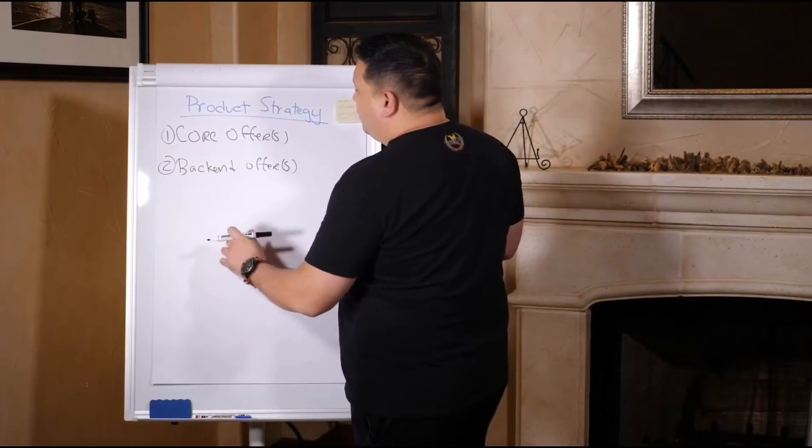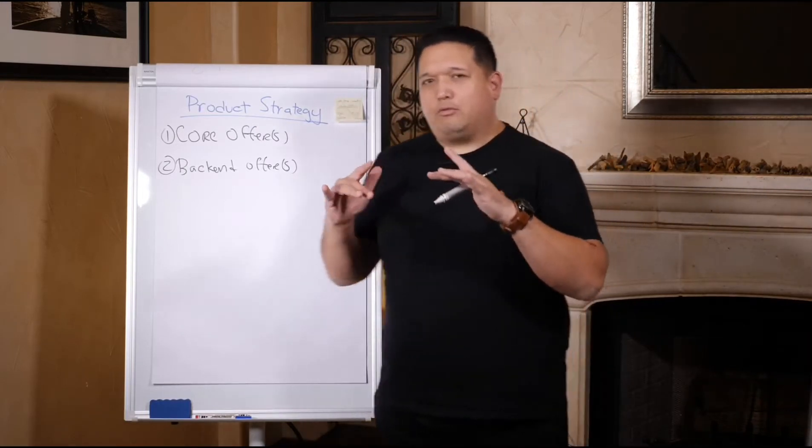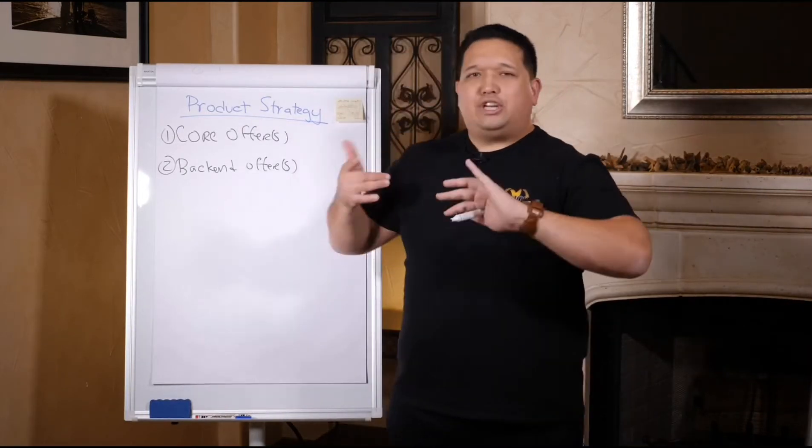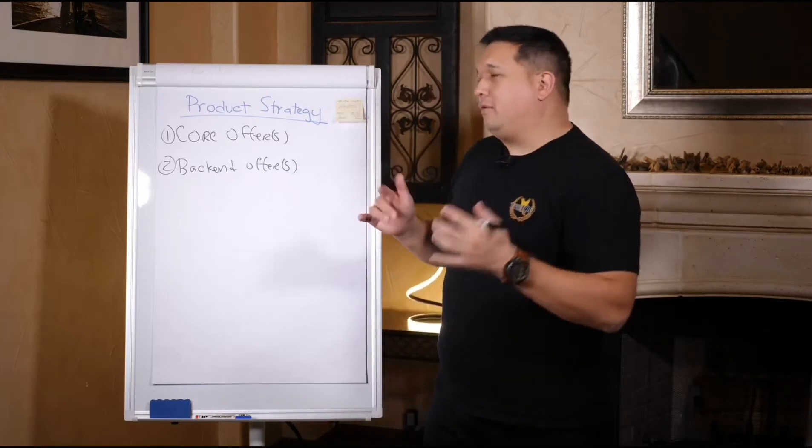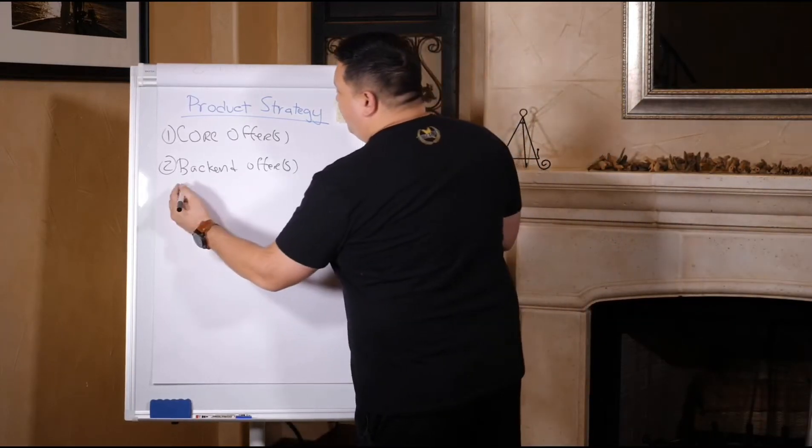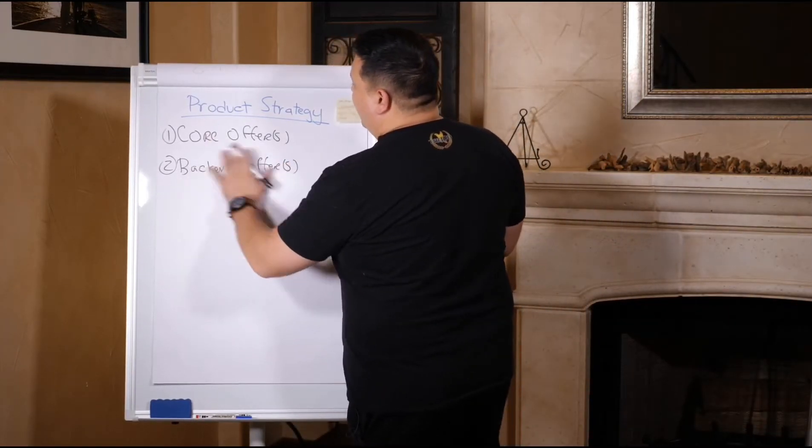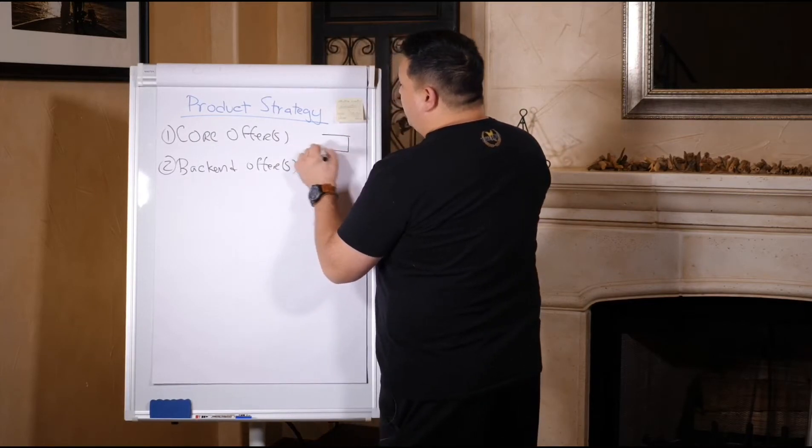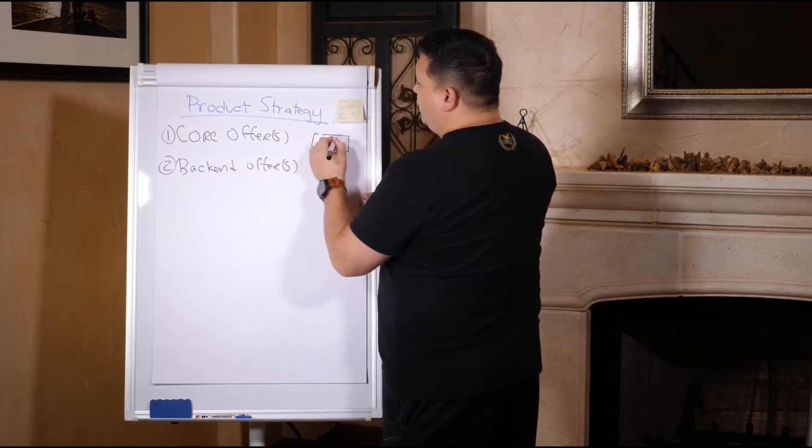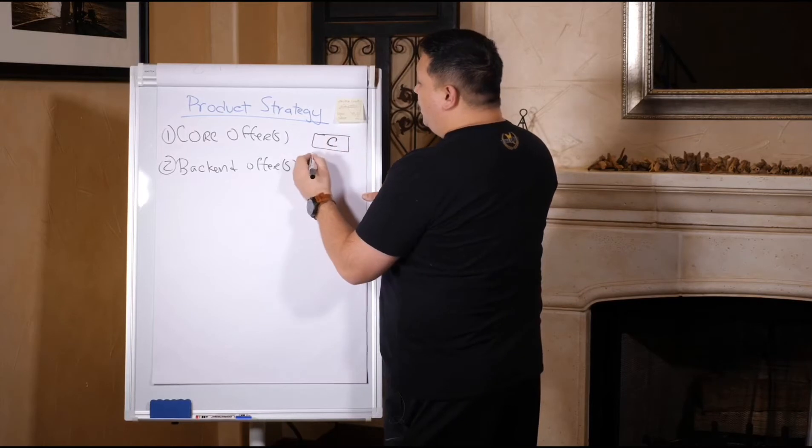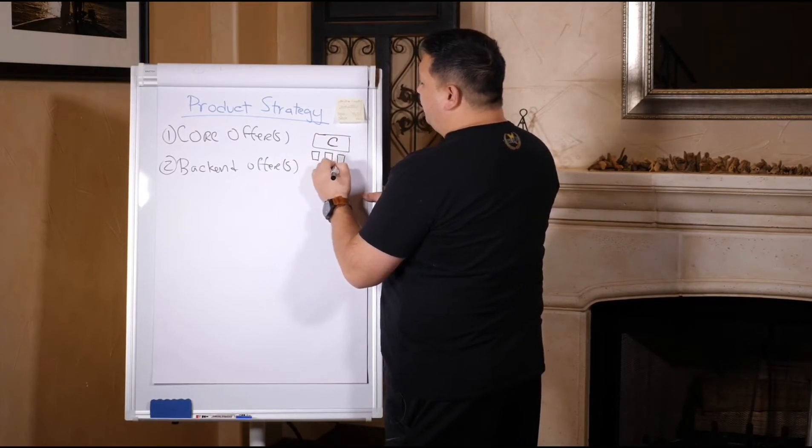In terms of your actual strategy, there's two strategies that I see working really well and we interchange them both. I want to show you how they're really reciprocal of each other. There's this strategy right here which means you have a core product offer and then you have a bunch of supporting backend offers.